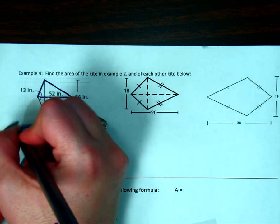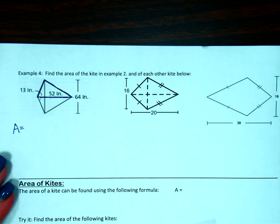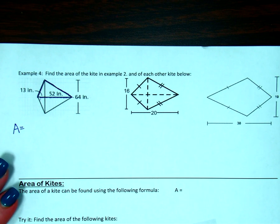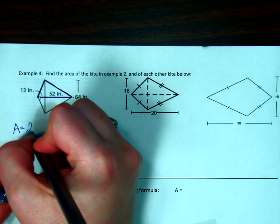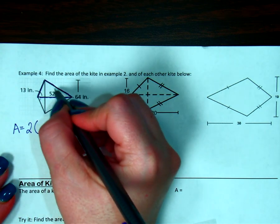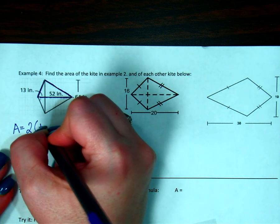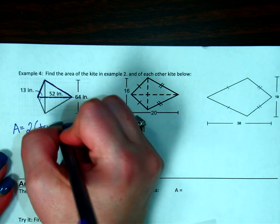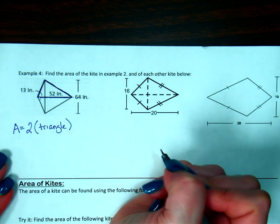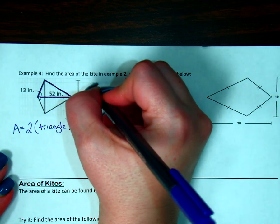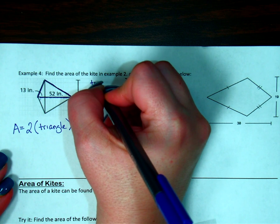So to find the area, if I can find the area of one triangle, all I have to do then is double it. So it's going to be two times this one side, which is a triangle. Okay, so let's find the area of the top triangle.